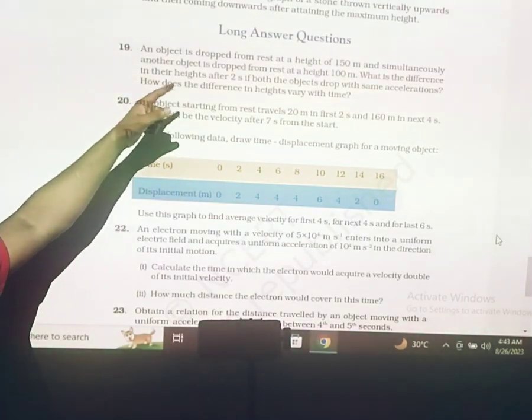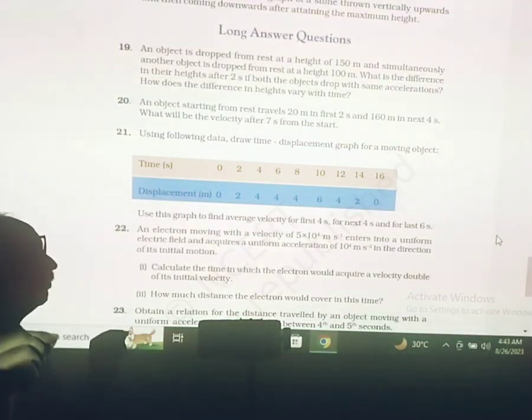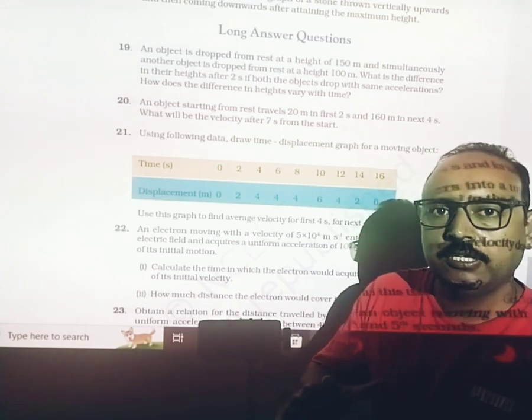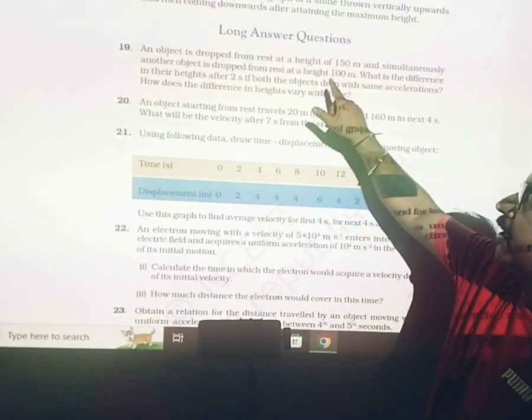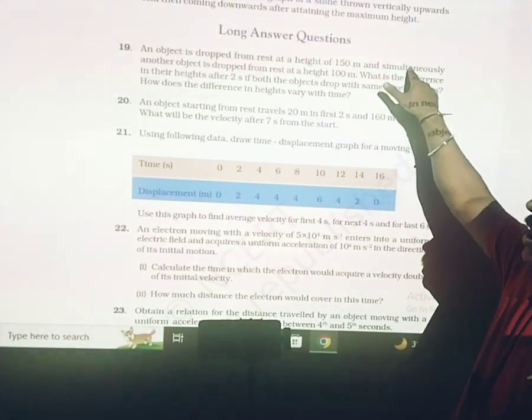So the statement here: an object is dropped from rest at a height of 150 meters. For numericals you have to just write down which quantity is given and what we have to find out. So we have 150 meter of height, and simultaneously...